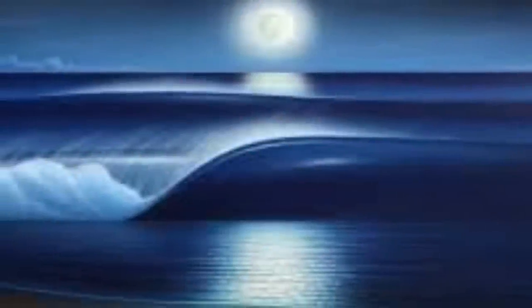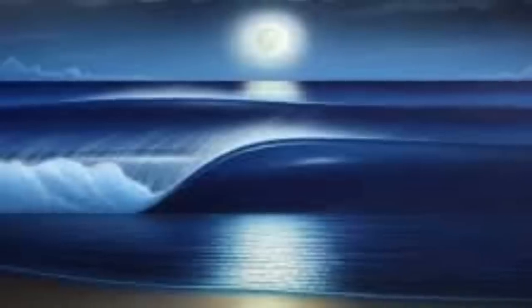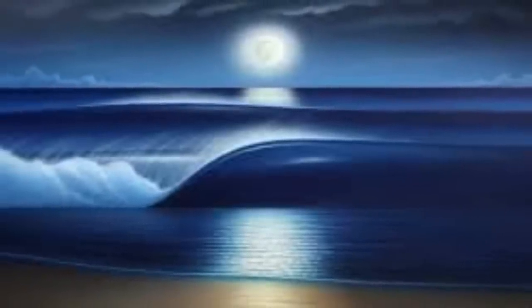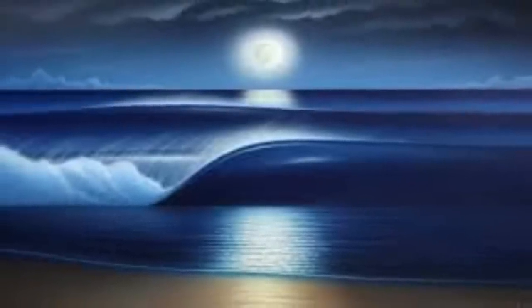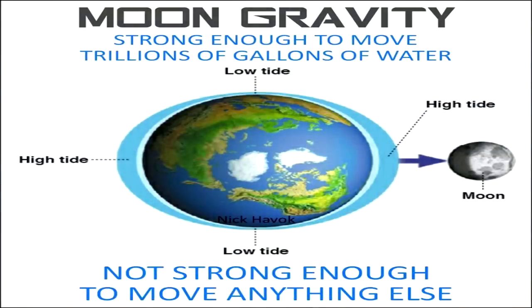Isaac Newton theorized, and it is now commonly taught and believed, that Earth's ocean tides are caused by gravitational lunar attraction. The Moon's gravity allegedly generates something called tidal force, which causes Earth and its water to bulge out, not only on the side closest to the Moon, but also the side farthest from the Moon.